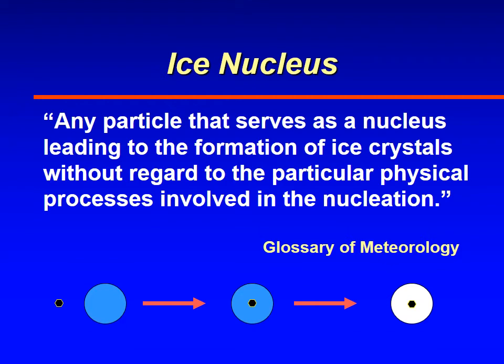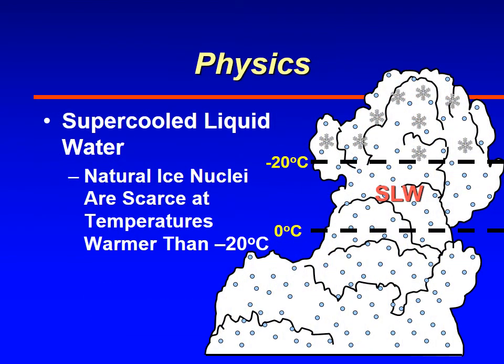Aerosols floating around in the atmosphere that help water droplets turn into ice crystals or freeze are known as ice nuclei. By definition, ice nuclei are any particle that serves as a nucleus leading to the formation of ice crystals. If you have a pure water drop and an ice nuclei strikes or touches it, that starts the freezing process. Another way is if an ice nuclei is embedded in the water droplet and doesn't start working until a certain temperature.